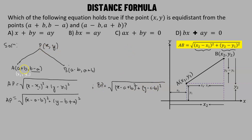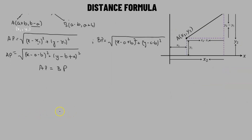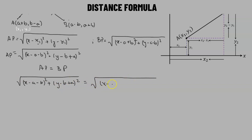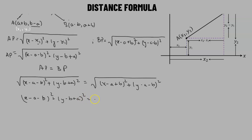Since point P is equidistant from A and B, AP equals BP. Squaring both sides removes the square roots, giving us: x minus A minus B whole squared plus y minus B plus A whole squared equals x minus A plus B whole squared plus y minus A minus B whole squared.